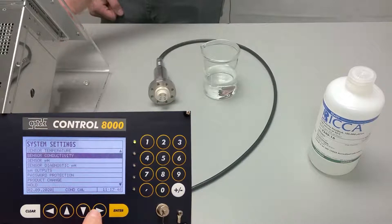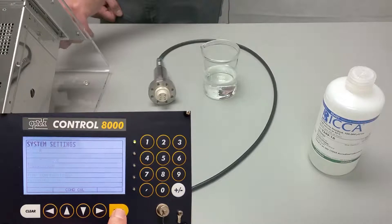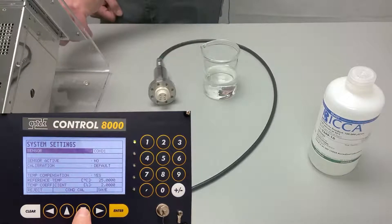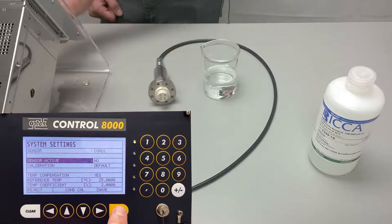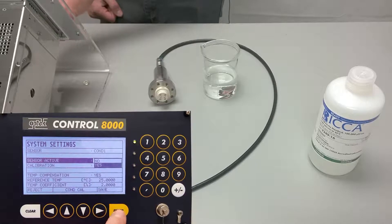Press down to get to the next menu for sensor conductivity and press enter. COND1 is selected; change sensor active from no to yes.